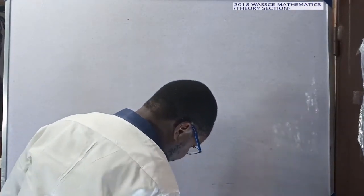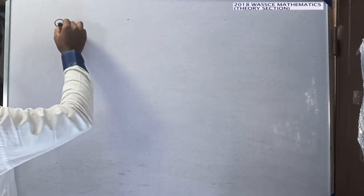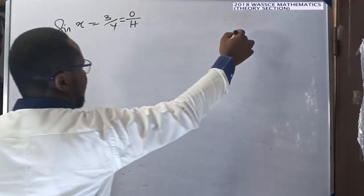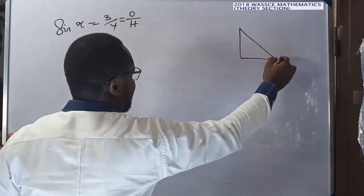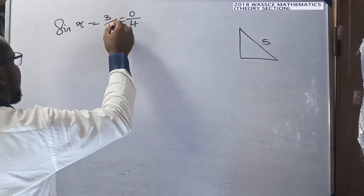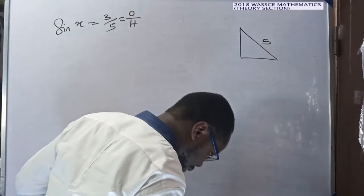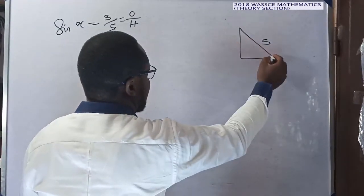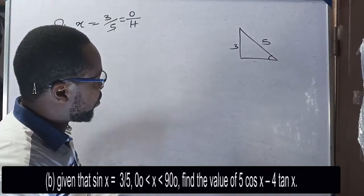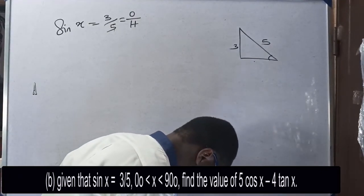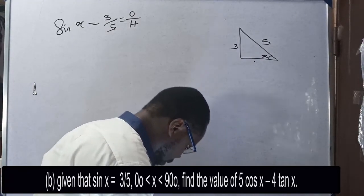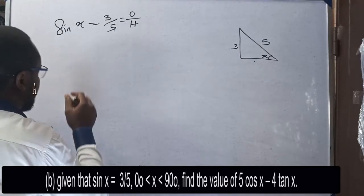Question 3b: given that sin x equals 3 over 5, recall that sine equals opposite over hypotenuse. So if I draw a right-angled triangle, the hypotenuse is 5 and the opposite side is 3. Taking x as the angle of reference, the opposite is 3 and the hypotenuse is 5. The question asks to find the value of 5cos x minus 4tan x.